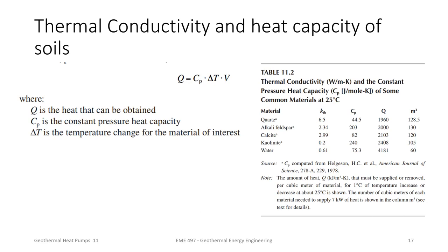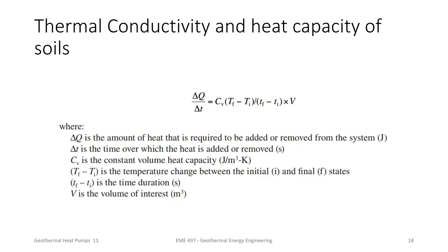Over here, we have how much heat can be obtained based on the material used and everything. So q equals cp times delta t times v, where q is the heat that can be obtained, cp is the constant pressure heat capacity, and v is, if I recall correctly, the number of moles per cubic meter of the material of interest, and delta t is the temperature change for the material of interest. And on the right, you have the table for all the information.